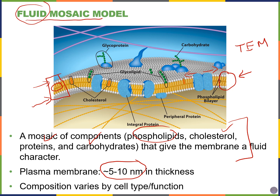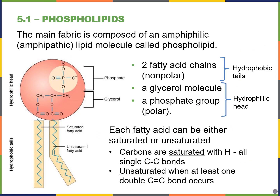For the carbohydrates on the surface of the cell membrane, they can either be attached to proteins in the form of glycoproteins, a carbohydrate-protein complex, or glycolipids, a carbohydrate-lipid complex. The main component of the membrane is really the phospholipid, and the phospholipid is known as an amphiphilic or amphipathic molecule because it has both water-loving and water-fearing parts.